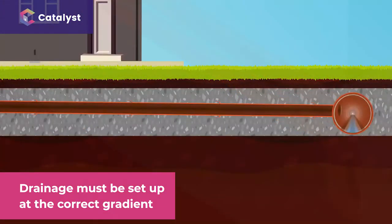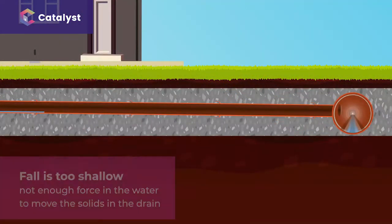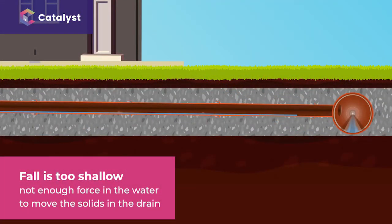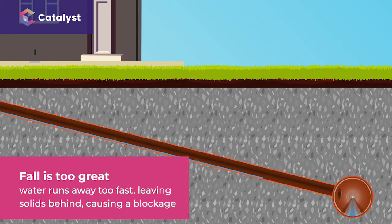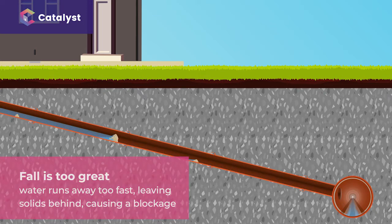Drains have to be set up at the correct gradient to function correctly. If the fall is too shallow, the water hasn't got enough force to move the solids in the drain, which can result in a blockage. If the fall is too great, water runs away too fast. This can leave solids behind, increasing the risk of blockages.